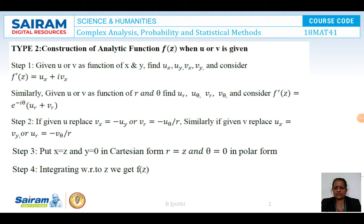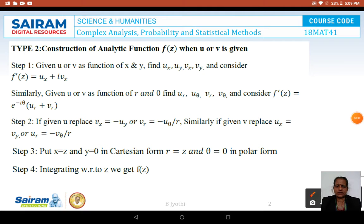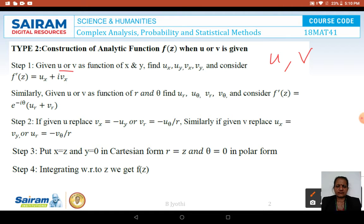The steps involved in Type 2 problems are the construction of the analytic function when U or V is given. In this type of problem, only a real part or the imaginary part, either in the Cartesian or in the polar form, will be given to us. The first step is that either U or V is given as a function of X and Y.